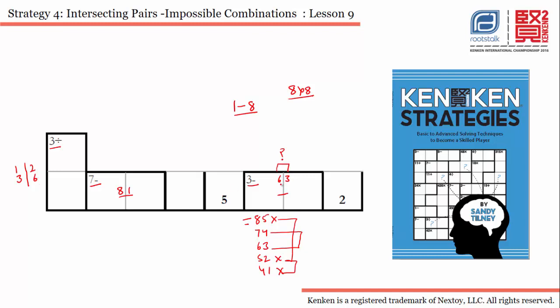Now the problem is, if we are using 6 and 3 in this particular cage, you will observe that you cannot use any of these two possible combinations. Why? Because if we use 1 and 3, we already have 1 and 3 in this cage. So 1 and 3 are not possible in this particular cell.